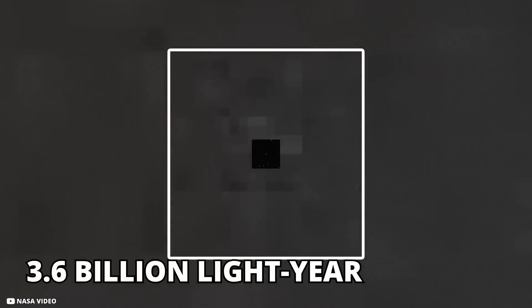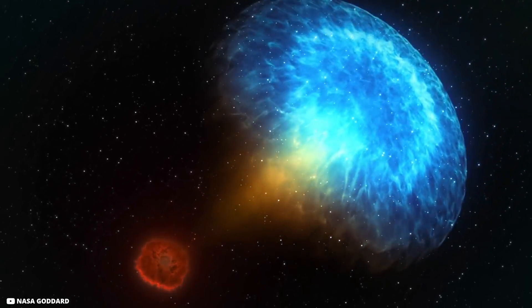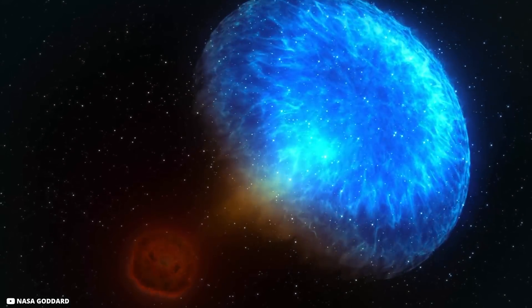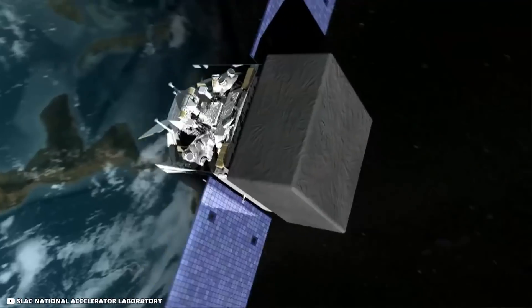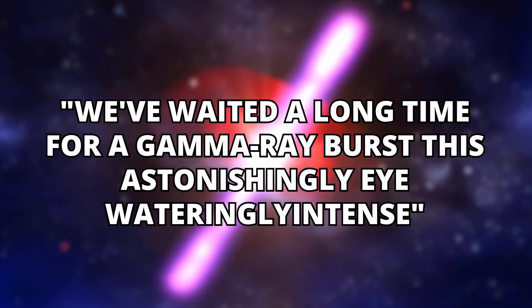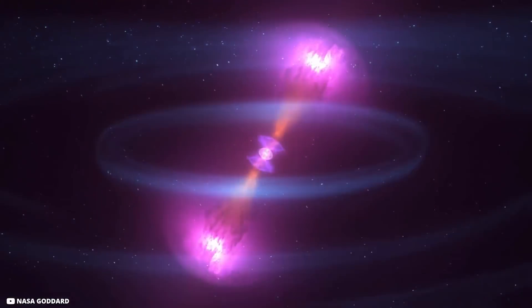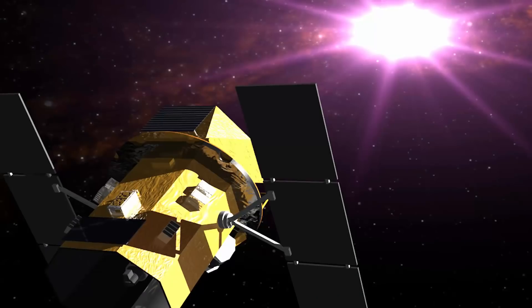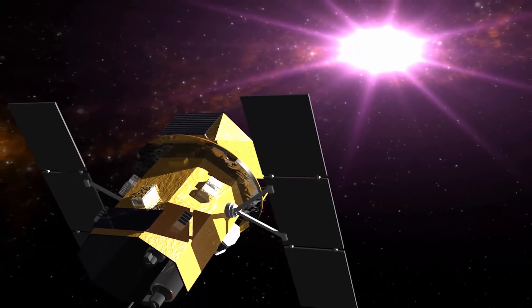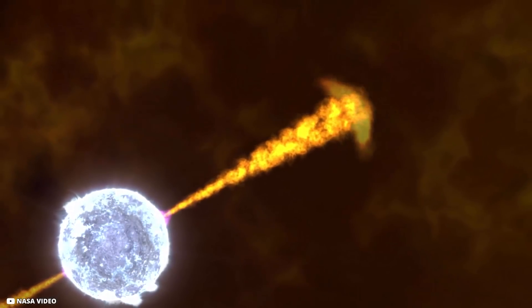At 3.6 billion light-years away, the explosion was far closer than typical gamma-ray bursts, allowing it to outshine everything else in the night sky for many seconds. Julie McEnery, a scientist at NASA's Goddard Space Flight Center in Greenbelt who works on the Fermi Gamma-ray Satellite Observatory, told the press that we've waited a long time for a gamma-ray burst this astonishingly eye-wateringly intense. The GRB lasted so long that it was seen by a record number of ground-based telescopes. Simultaneously, space-based observations were continuing.